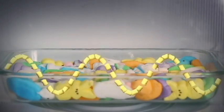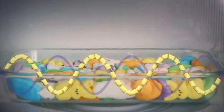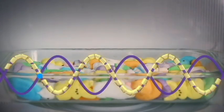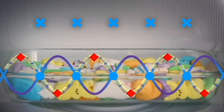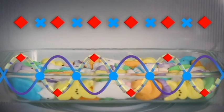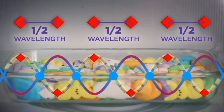Inside, microwaves are bouncing around. In some spots there isn't much energy at all, and the peeps in those areas stay cold. In other spots there's lots of energy and the peeps get really hot. Those hot spots are half a wavelength apart.